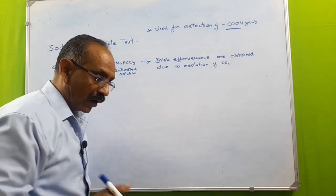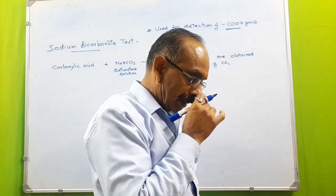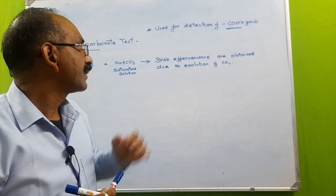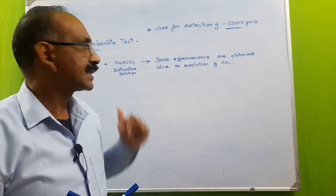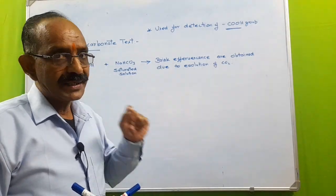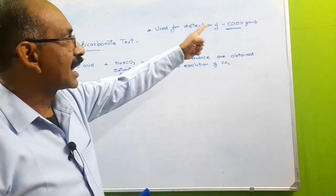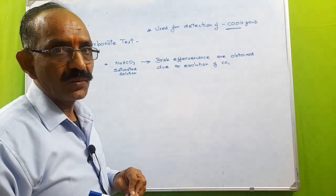So on adding the saturated solution of sodium bicarbonate, if brisk effervescence comes out, this indicates that the compound is having carboxylic group or COOH group.